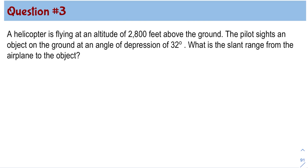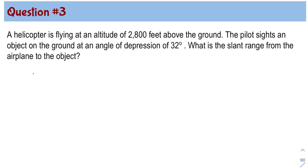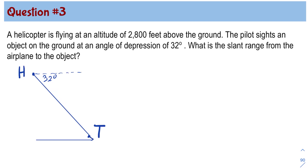Question number 3. A helicopter is flying at an altitude of 2,800 feet above the ground. The pilot sights an object on the ground at an angle of depression of 32 degrees. What is the slant range from the airplane to the object? To draw the diagram, point H is the location of the helicopter and point T is the location of the object on the ground. Connecting point H to point T is the line of sight, and the angle of depression is 32 degrees. So this X value represents the slant range.